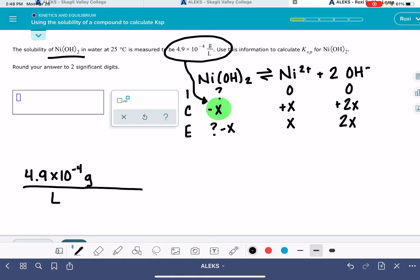So this is specifically 4.9 times 10 to the minus 4 grams of NiOH2. Now these units of grams per liter are not compatible with an ICE table. ICE table units, we want them in units of moles per liter or molarity, so the very first thing that I'm going to do here is convert those grams of NiOH2 into moles.